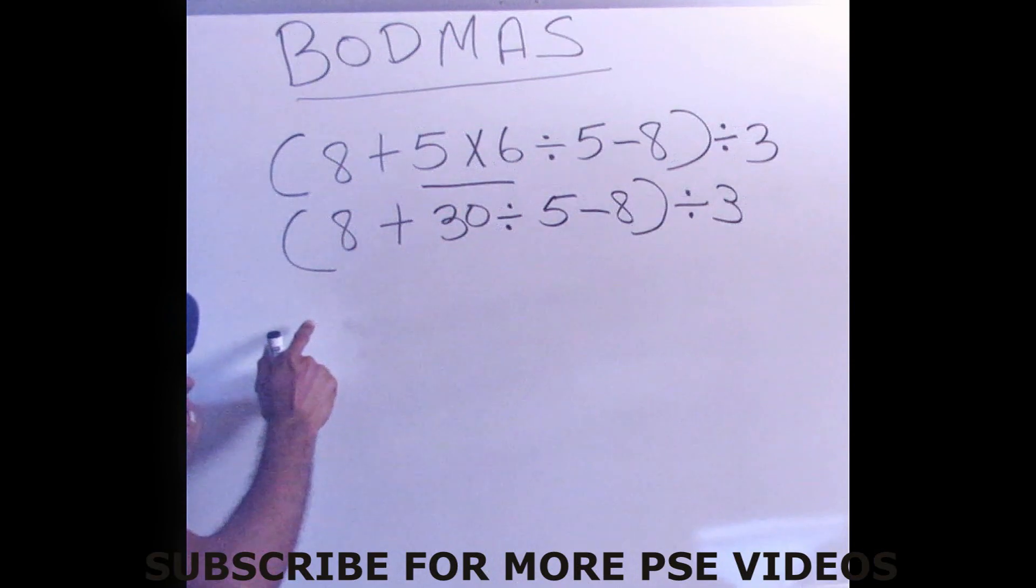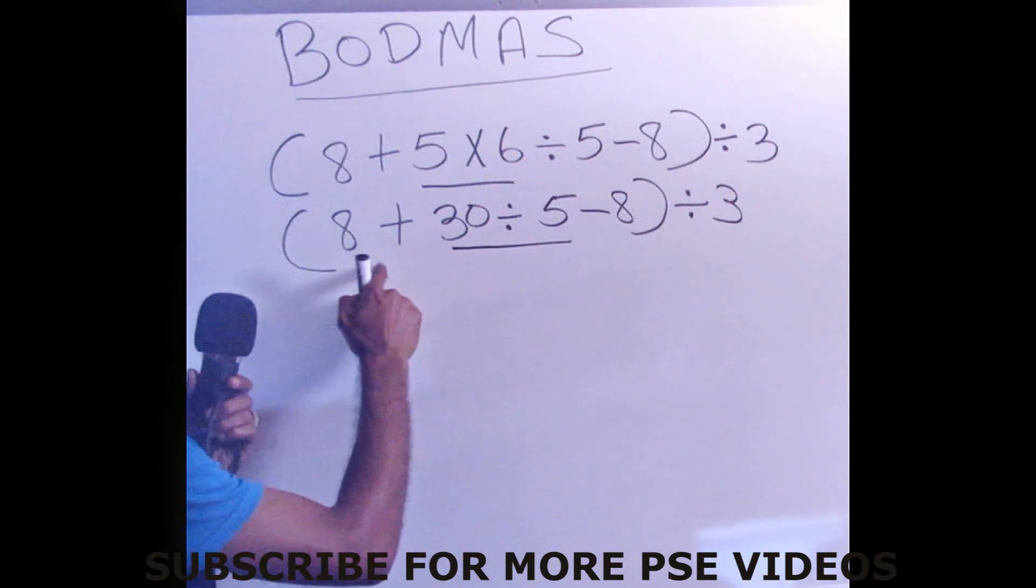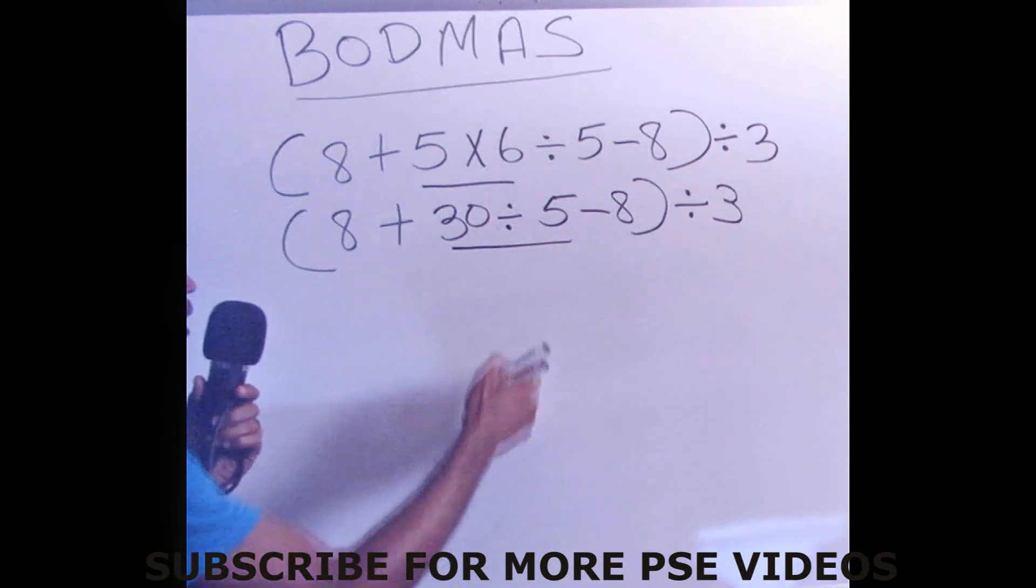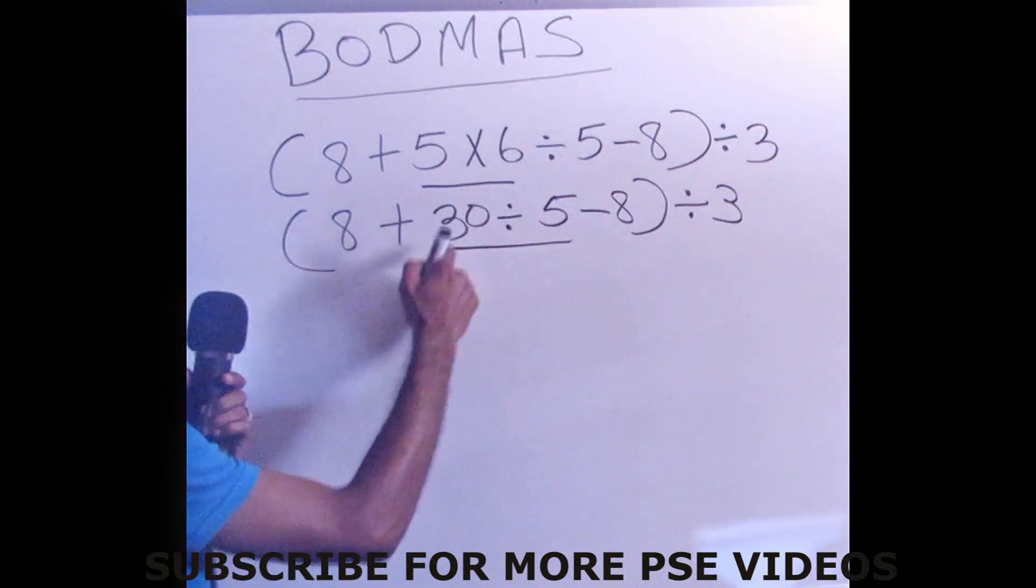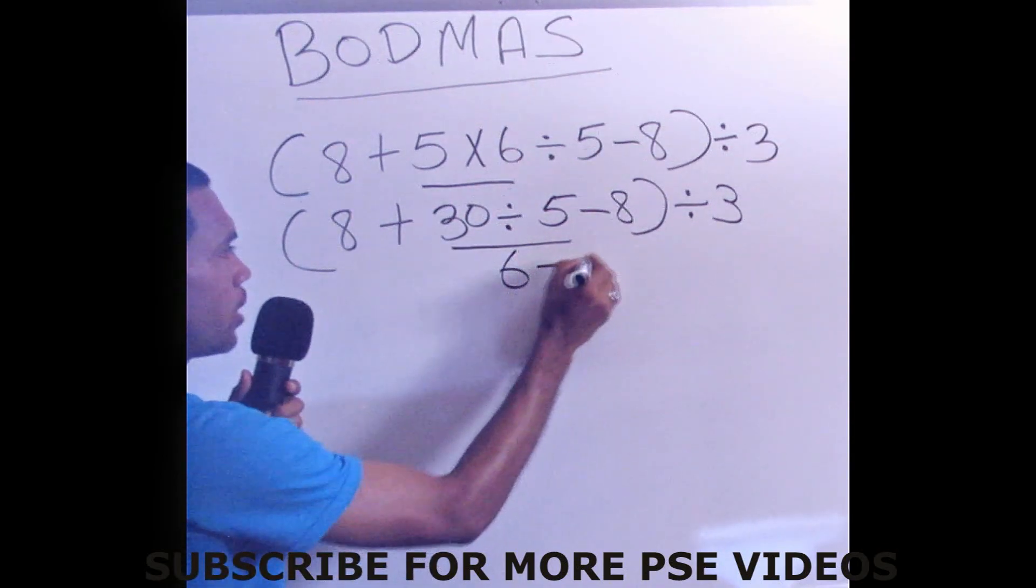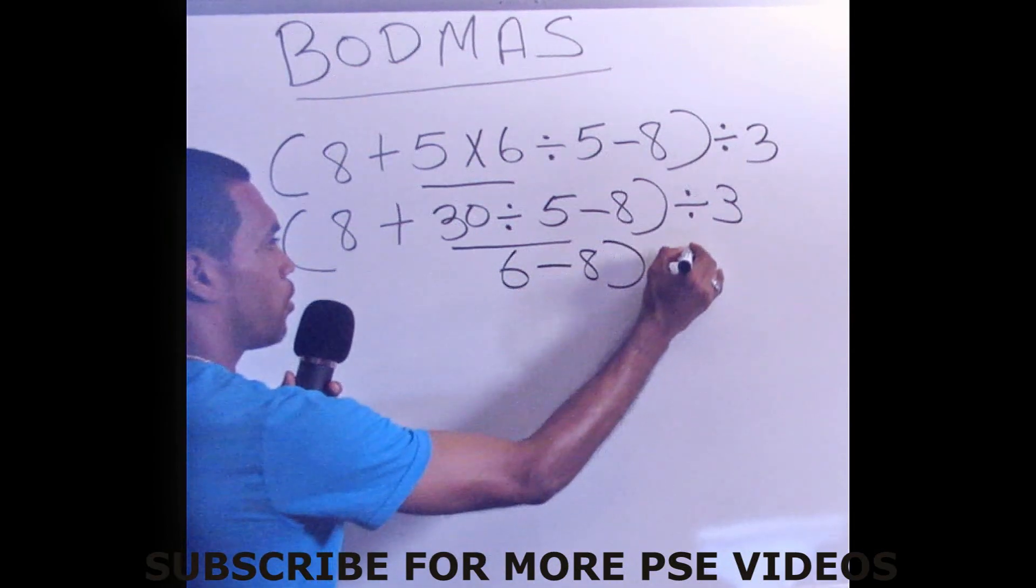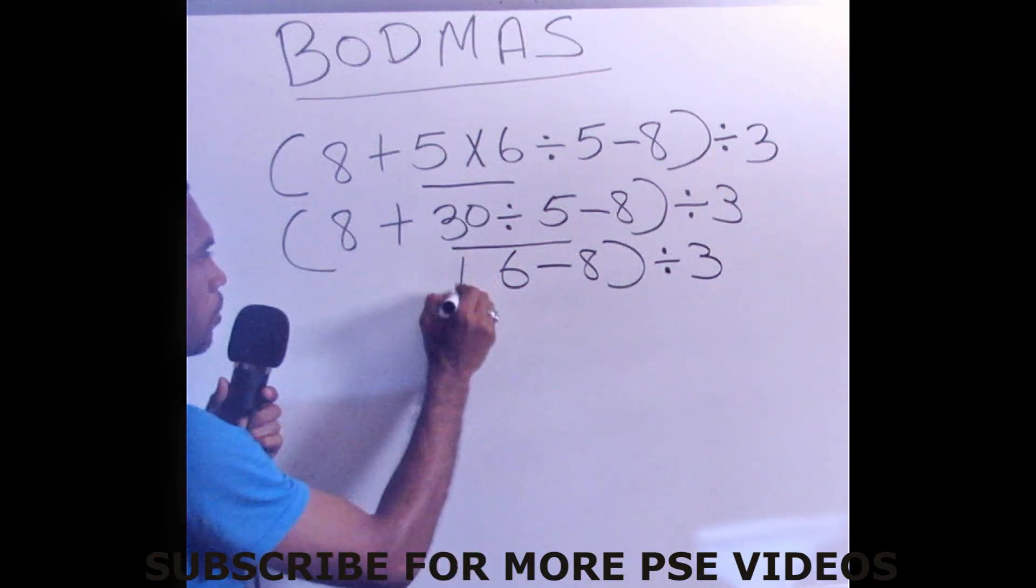So we continue by working what is in bracket. But remember, of course we know that division comes before addition and subtraction, so we're going to divide. 5 could go into 30, 6 times. So you bring down your minus 8, you close bracket, bring down your divided by 3, and bring down your plus 8.